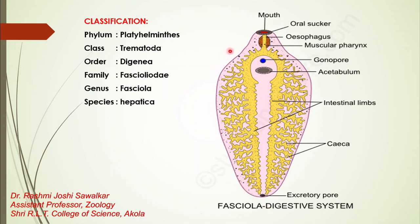Now, see the diagram of the digestive system. In the previous lecture, we studied the complete structure of Fasciola Hepatica. It is a flat, dorso-ventrally flattened, leaf-like animal whose anterior end is triangular and the posterior part is somewhat narrower. There are three openings in the body: the mouth, the gonopore, and the excretory pore. Now let's start the digestive system of Fasciola Hepatica.